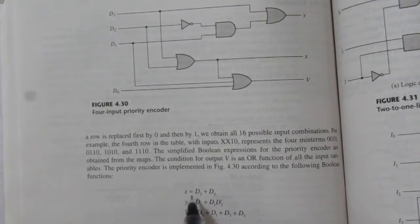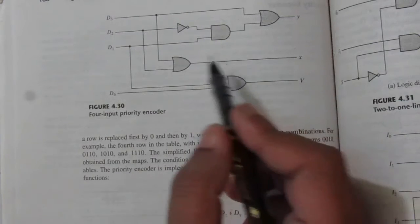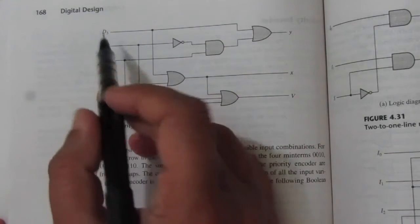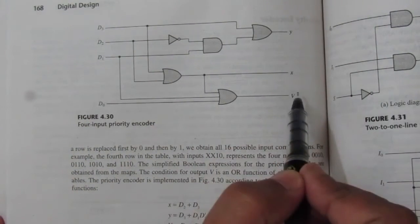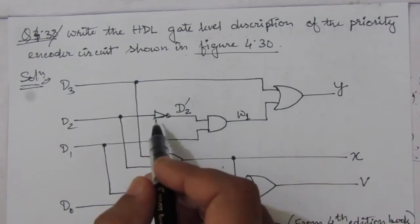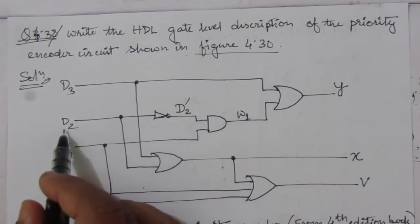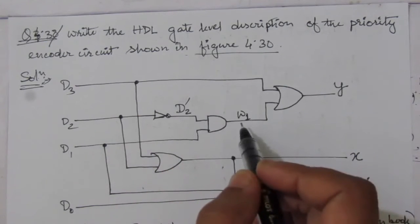Figure 4.30 shows the output functions x, y, and capital v. Using these equations, the circuit diagram is drawn. The inputs are d0, d1, d2, and d3, and the outputs are x, y, and capital v. In the circuit, after this inverter, we have assumed it to be d2 complement because d2 is the input, so it will be complement of d2. We have also assumed wire w1.